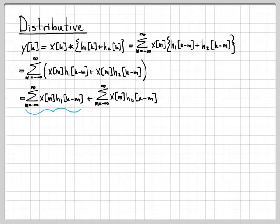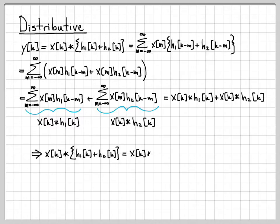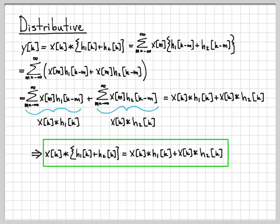Now, looking at what we have — the first summation is actually equal to x of k convolved with h1, because by definition that is x convolved with h1. Similarly, the second term is x convolved with h2. So we've written this as x convolved with h1 plus x convolved with h2. We have shown that x convolved with the sum h1 plus h2 is the same as x convolved with h1 plus x convolved with h2 — the distributive property of discrete time convolution.